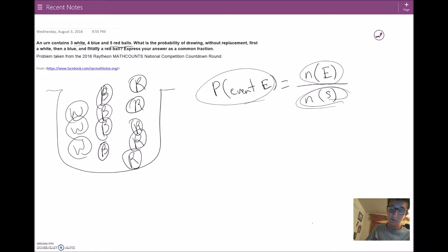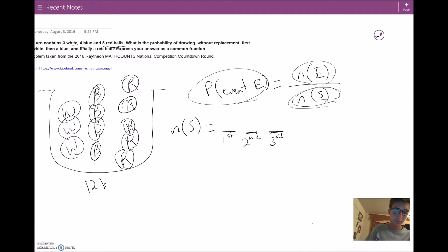Let's start with n(S), the sample size. How many choices do we have for the first ball, the second ball, and the third ball? Well, let's look at how many balls there are in total. 5 plus 4 plus 3, so we have 12 balls in total. How many choices do we have for the first ball? We have 12 choices. How many for the second one if we aren't replacing them? Without replacement means we aren't replacing the balls.